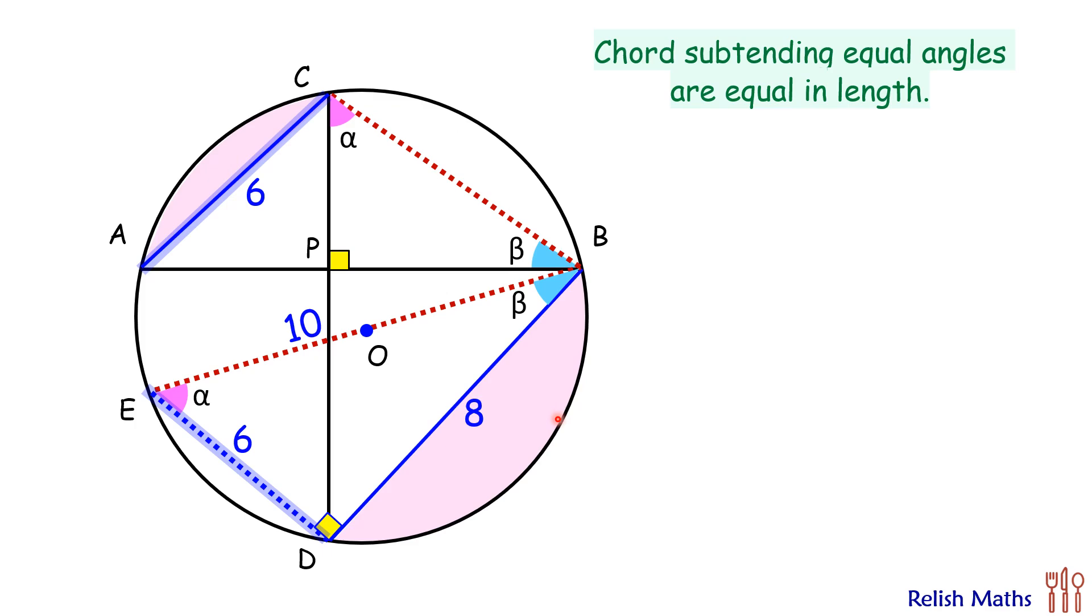Also, chords of equal length cut the circle into the same parts. Thus, the minor segment AC, the area of this segment, will be the same as the area of segment ED. So basically, we have to find the area of this particular segment here and this segment, and this area of the shaded region.